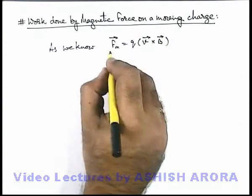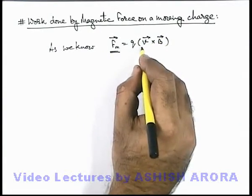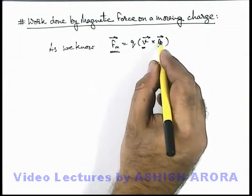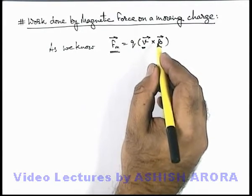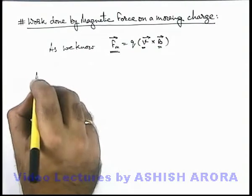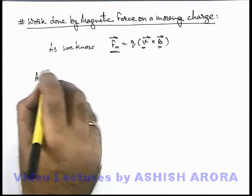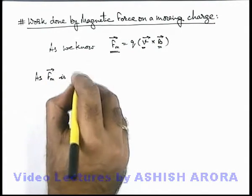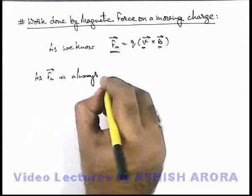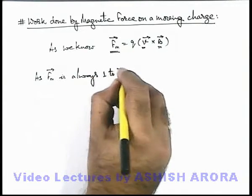Here we can see the direction of magnetic force is perpendicular to velocity as well as magnetic induction. So we can write that this magnetic force vector is always perpendicular to the velocity vector.